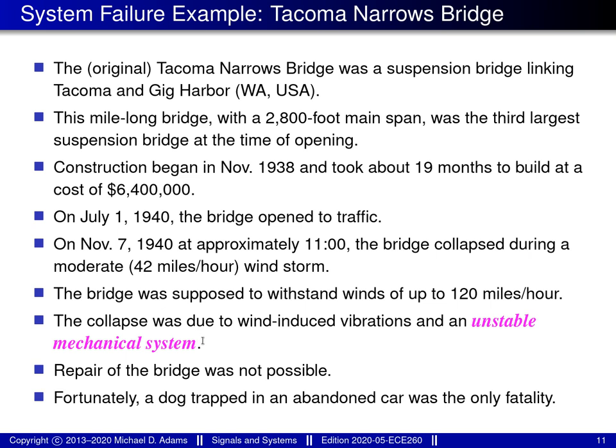The collapse was caused by wind-induced vibrations. Structures have natural resonant frequencies, and the wind — even though it wasn't particularly strong — happened to hit that natural resonant frequency. The bridge started vibrating, and because it wasn't properly designed, the energy wasn't dissipated. The oscillations grew with greater and greater amplitude until the structure ripped itself apart. The failure was completely catastrophic — they had to tear down what remained and start over. Fortunately, the only fatality was a dog trapped in an abandoned car on the bridge. More recent examples exist too — hello Boeing 737 MAX.